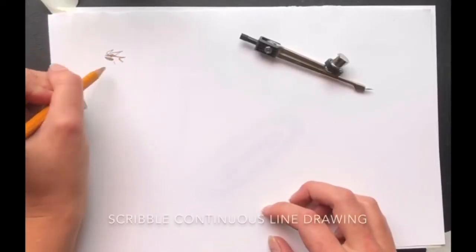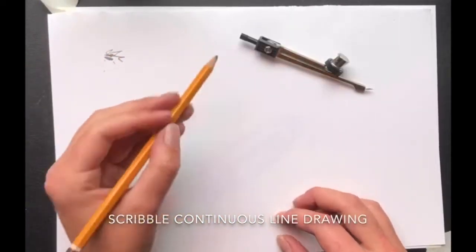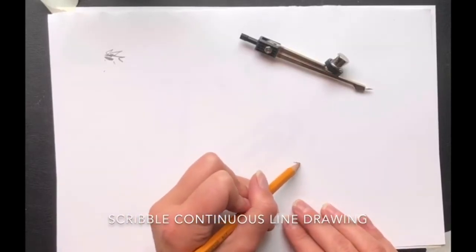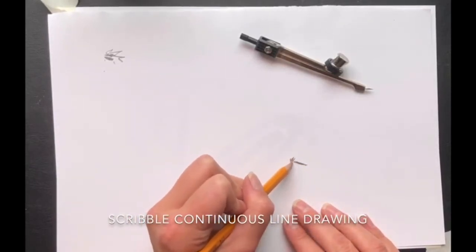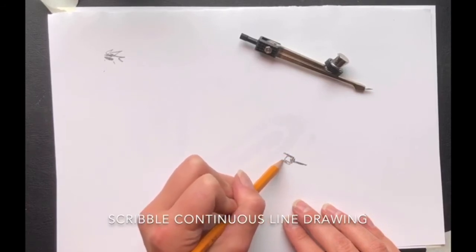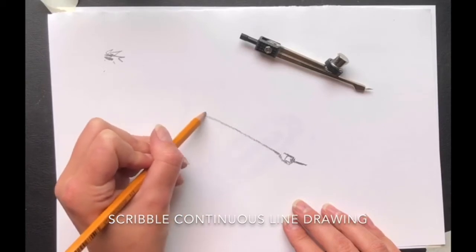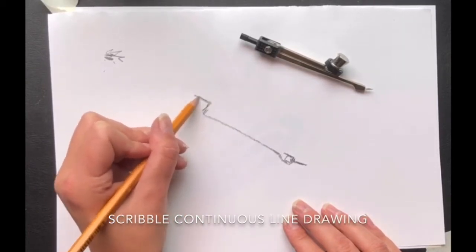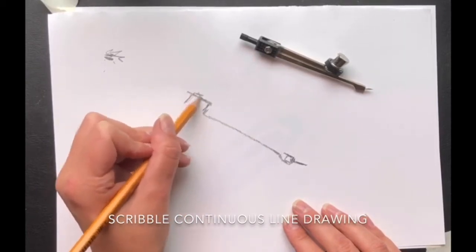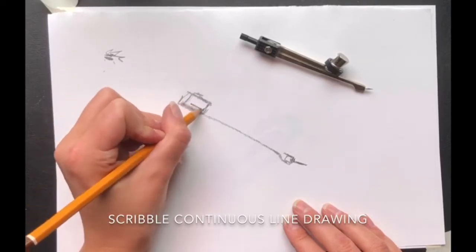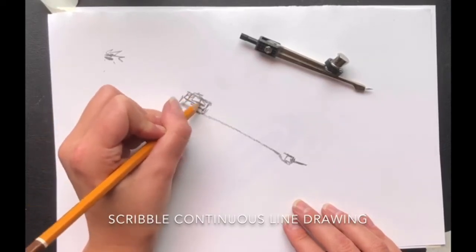Right, so the next task is scribble continuous line drawing. Now, with this technique, it's like you're scribbling but with a purpose. So when you see a three-year-old scribbling, there isn't really a purpose. They're not trying to draw anything, but they're just expressing something. But for you guys, with this task, I want you to purposely scribble in a way that looks like something.